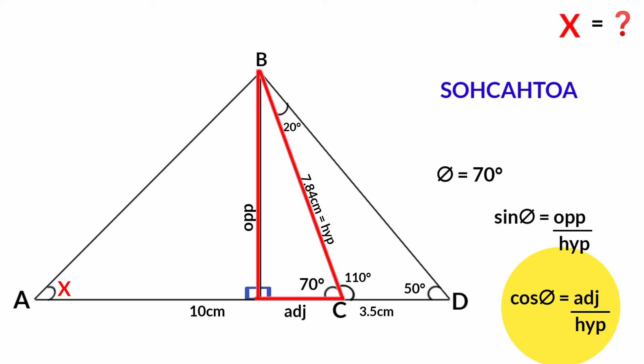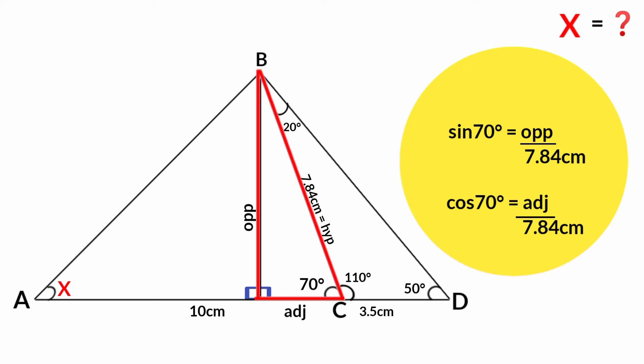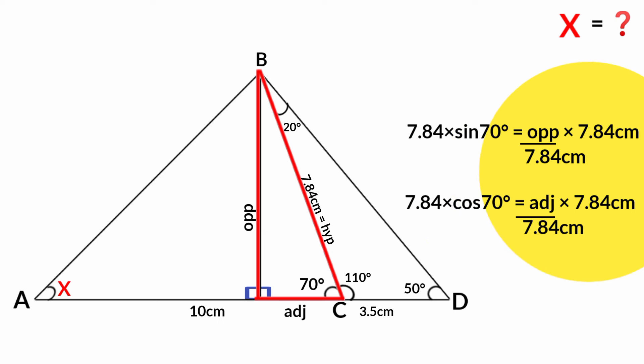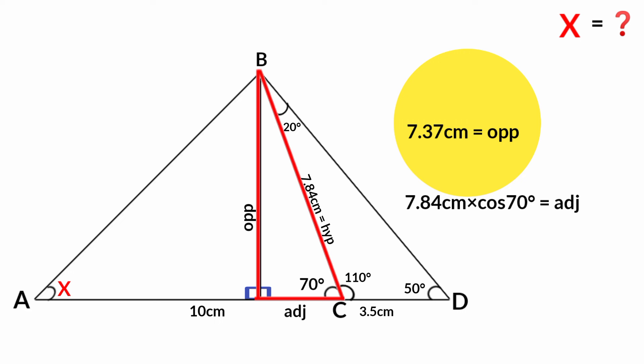From here: sine theta equals opposite over hypotenuse, and cos theta equals adjacent over hypotenuse. Theta is 70 degrees and the hypotenuse is 7.84 centimeters. So sine 70 degrees equals opposite over 7.84 cm, and cos 70 degrees equals adjacent over 7.84 cm. Multiplying both sides by 7.84: the opposite is 7.84 times sine 70 degrees, which is 7.37 centimeters.